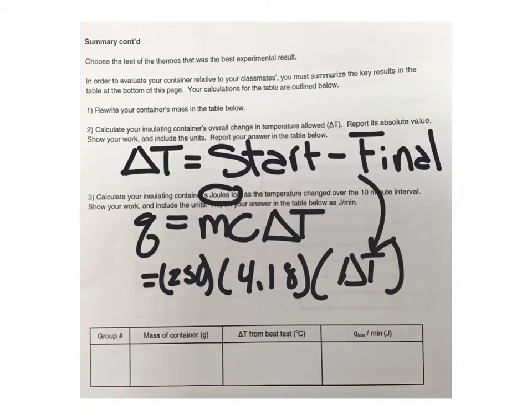Once you've calculated your q, that represents the joules that your water lost. So to fill in the data table in the very last box, you would take your number of joules and divide by the 10 minutes of time, and that will get you the unit joules per minute. Then you can fill in your delta t from number 2 and the mass of your container from your data table along with your group number.